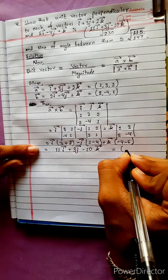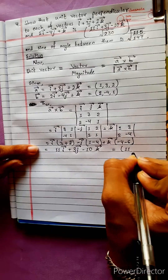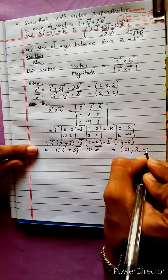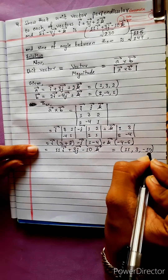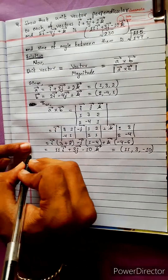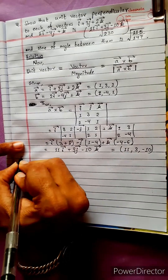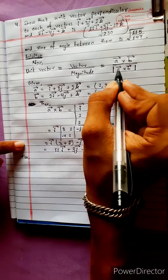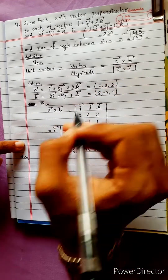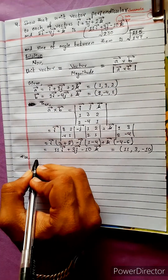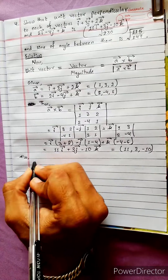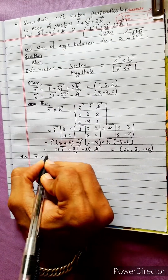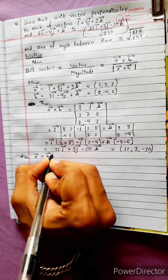So the cross product result is 11i, 3j, minus 10k. Now we find the magnitude of the cross product: magnitude of a vector cross b vector.